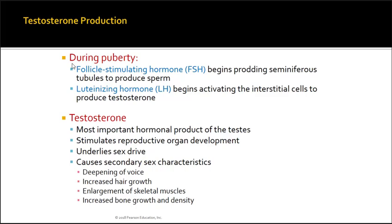During puberty, follicle-stimulating hormone is responsible for initiating sperm production by the seminiferous tubules, while luteinizing hormone enables the production of testosterone by the interstitial cells. Testosterone is the most important hormonal product of the testes. It stimulates reproductive organ development, sex drive, and secondary sex characteristics — including deepening of the voice, increased hair growth, enlargement of skeletal muscles, and increased bone growth and density.